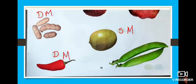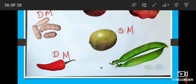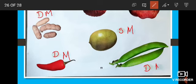And look at the last one. What is this? Very good. Is it dry or soft and juicy? It is a dry one. So you have to write D. And how many seeds is it having? Many seeds. So we write M.